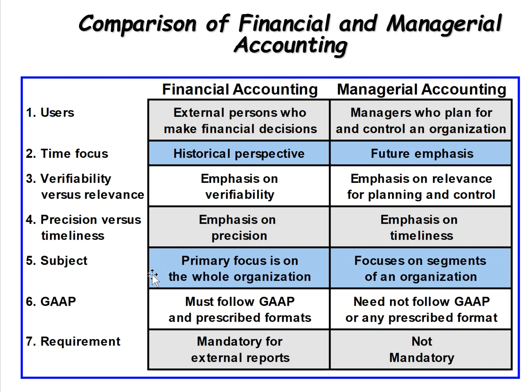For financial accounting, the subject is focused on the whole organization — we prepare financial statements for the entire company. Under managerial accounting, we can pull reports by division or department to get detail for each segment of the organization. Financial reporting is a big summary with limited detail, partly so people outside the organization — particularly creditors — don't have that information. Financial must follow GAAP. Managerial doesn't need to follow GAAP or any prescribed format, and there is no mandatory reporting under managerial accounting.